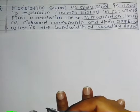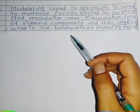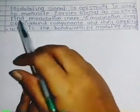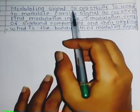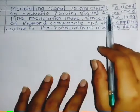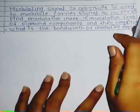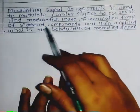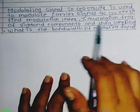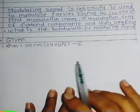Hello students, today we see an important problem based on the derivation of amplitude modulation. The modulating signal equation is 20 cos(2π × 10³t), used to modulate the carrier signal equation 40 cos(2π × 10⁴t). We need to find the modulation index, percent of modulation, frequency of sideband components and their amplitude, and the bandwidth.